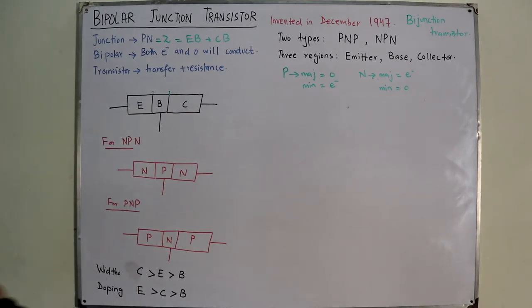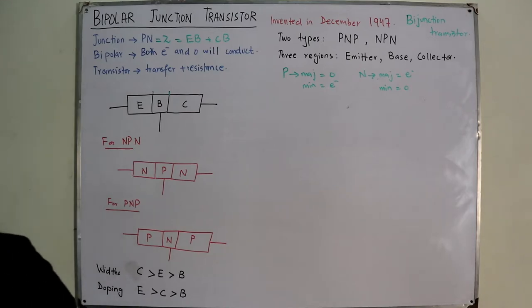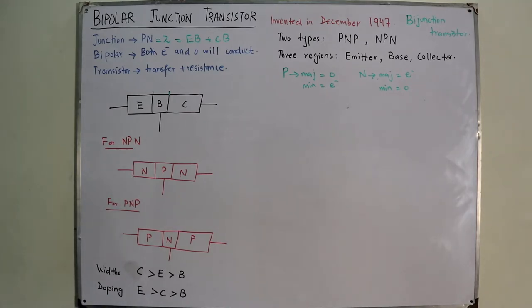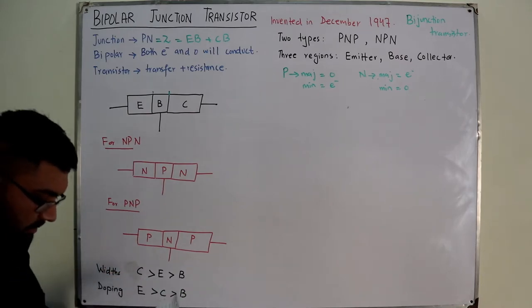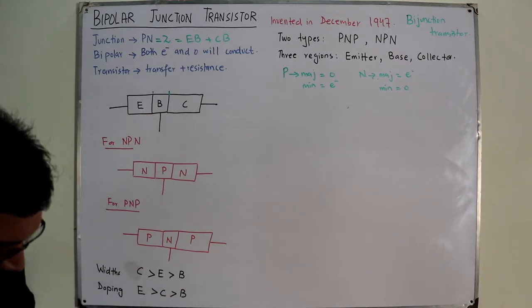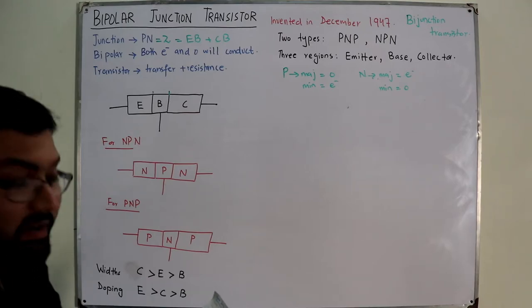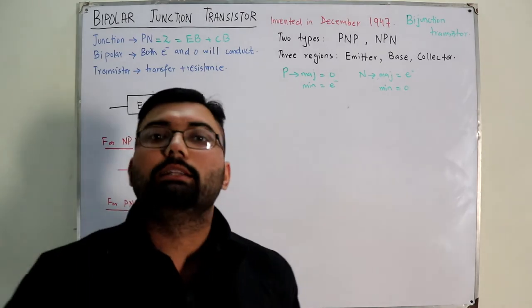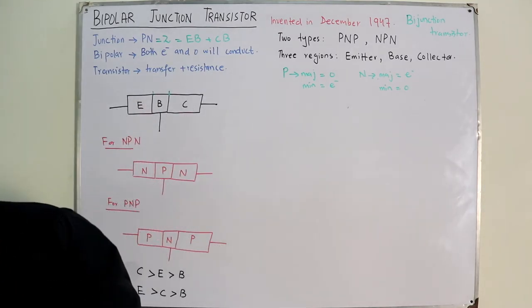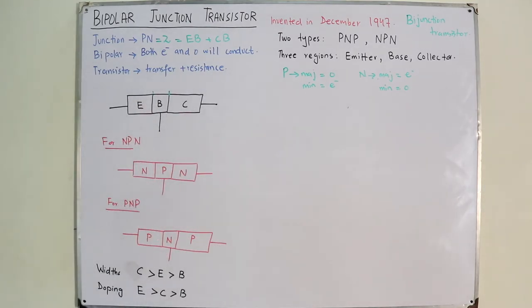These doping and width differences have their own reasons. High doping gives high charge carrier concentration, so conductivity is greater and resistivity is less. Let's now look at the BJT symbol. For the NPN transistor, you draw a circle with a straight line representing the base, and two lines on either side representing the collector and emitter respectively.